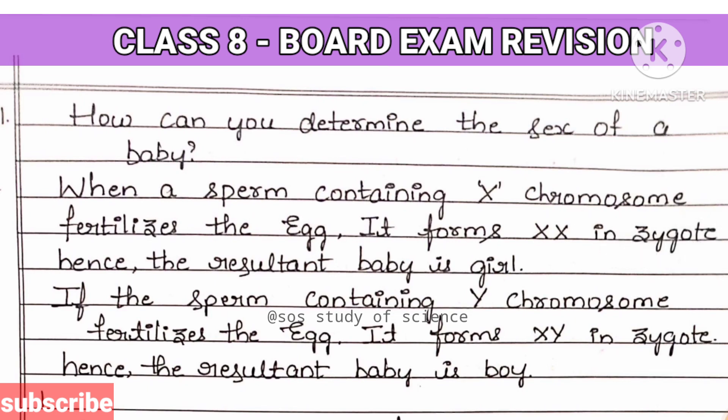How can you determine the sex of the child? When a sperm containing the X chromosome fertilizes the egg — the egg always contains the X chromosome — it forms XX in the zygote, which results in the formation of a girl baby. Similarly, when the sperm containing the Y chromosome fertilizes the egg, it forms XY in the zygote, which results in the formation of a boy baby. So it all depends upon the type of chromosome contributed by the father, because the sperm contains either the X chromosome or the Y chromosome.